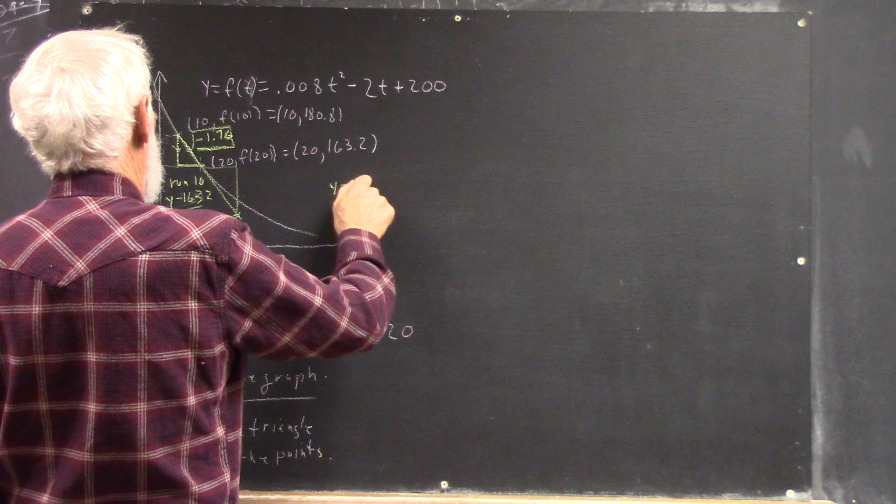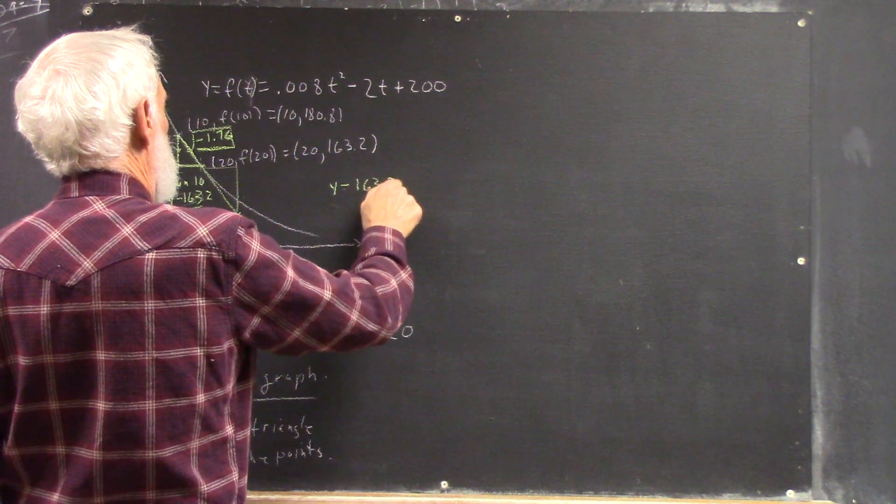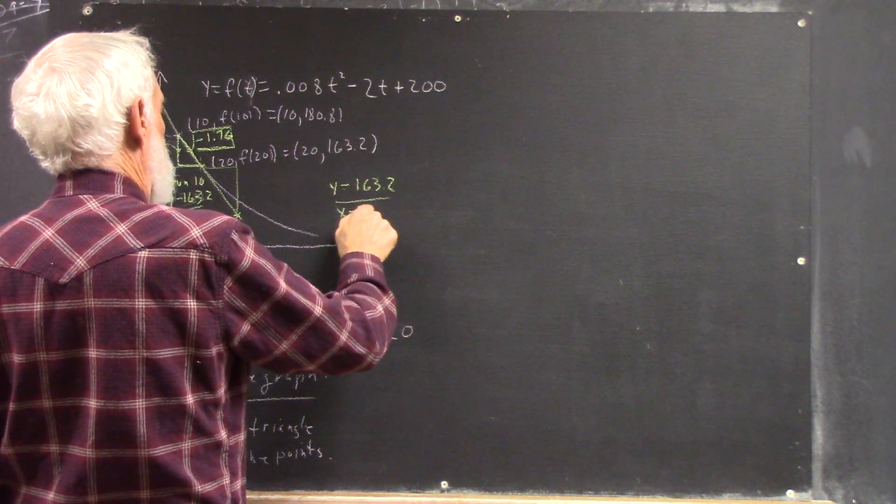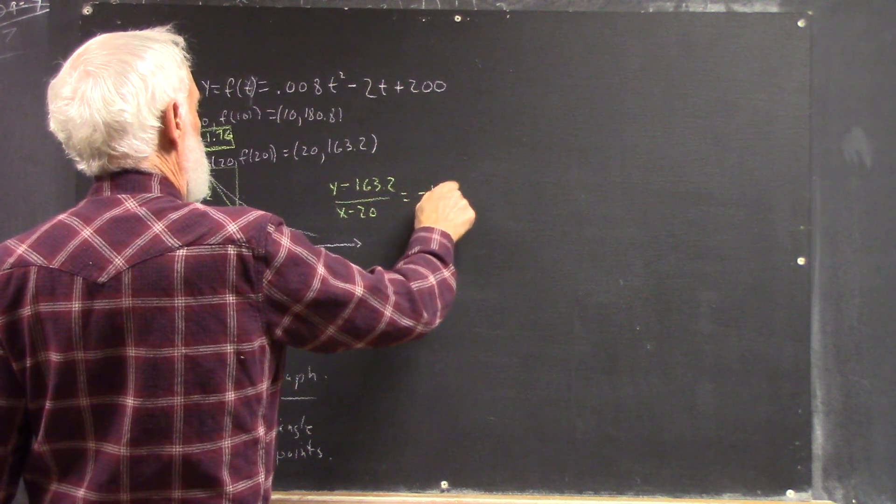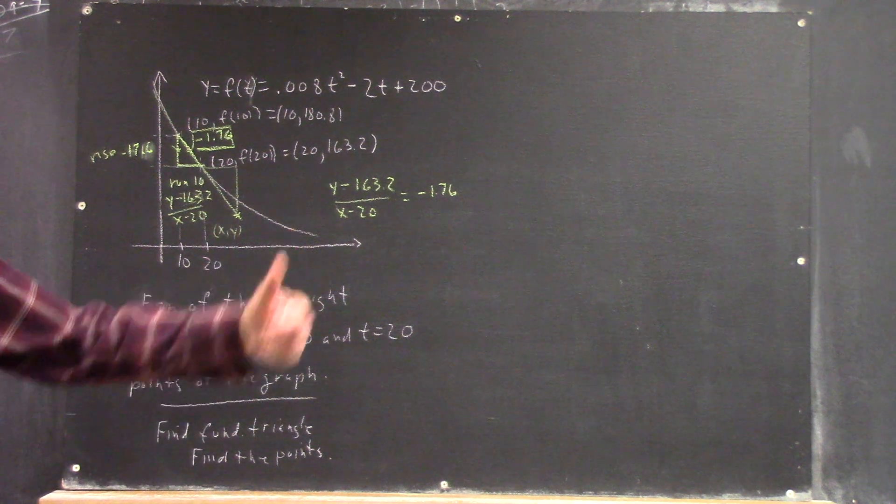And for the line, (y - 163.2) / (x - 20) has to equal negative 1.76. Slope equals slope.